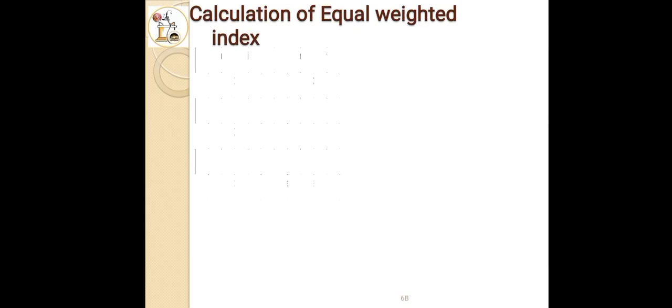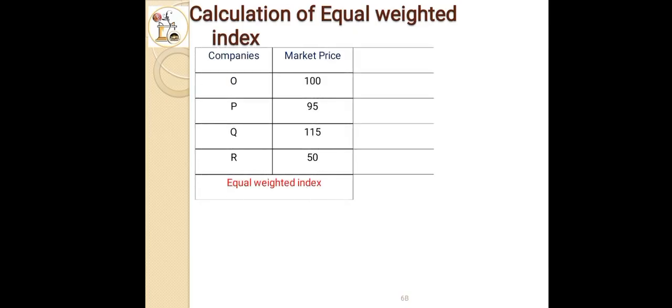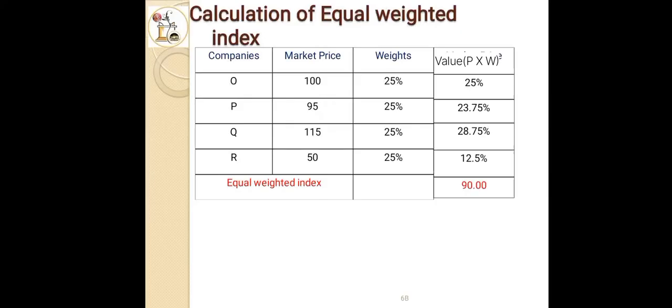The next step is calculation of equal weighted index. Companies and market prices are already given. We write another column for weights, 25 percent for all companies. The formula for calculation is market price multiplied by weights.